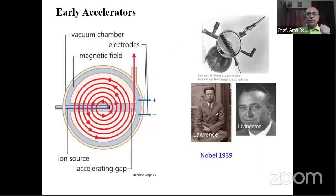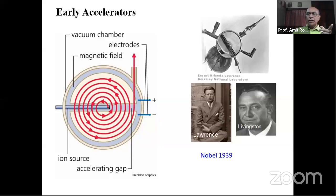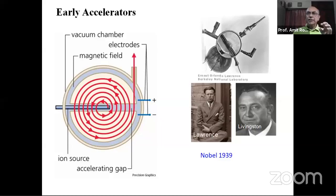The next big development came from Ernest Lawrence at Berkeley, California — a 29-year-old assistant professor. He came across Wideroe's paper, which was written in German. Lawrence didn't know German, but he could see the diagrams showing the tubes and alternating voltages. He thought it was a great idea. However, he realized that to generate high energy, you'd need many tubes one after the other, making the machine very long. So he thought of a very clever idea: take an RF electrode, place it in a magnetic field between two magnets.